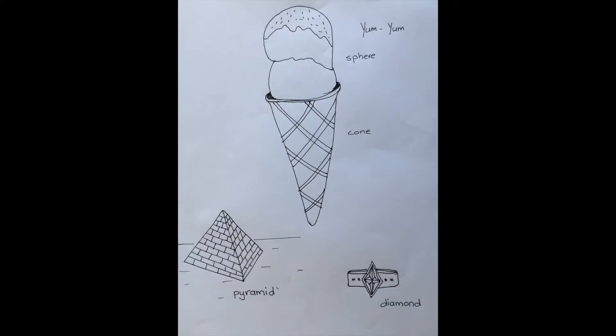Our ice cream is a cone and two spheres. The pyramid, as you know and can see, is a pyramid and of course here we have a diamond ring using the diamond shape.